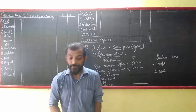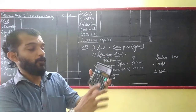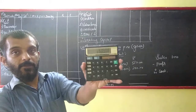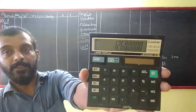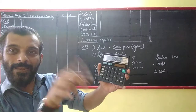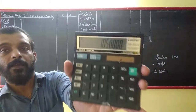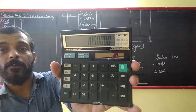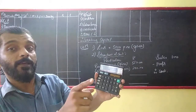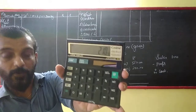Expenses are ₹1,26,00,000 per annum. Per annum means 12 months, so divide by 12. That gives ₹1,26,000 per month. Then divide by 5,000 units. So per unit rate of expenses is ₹210. I hope it's clear.